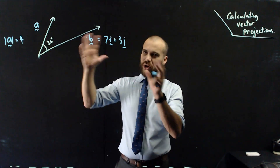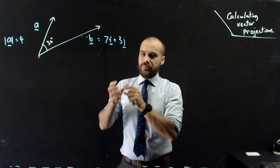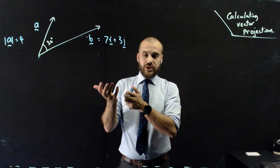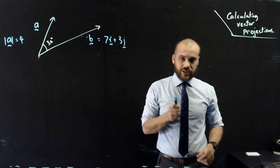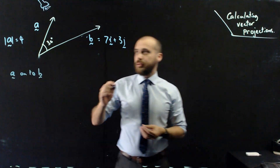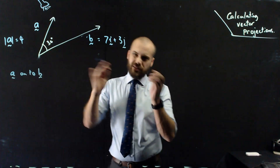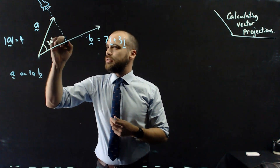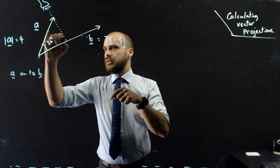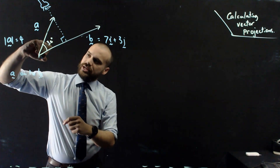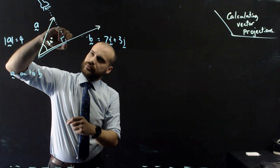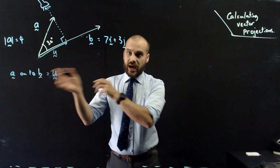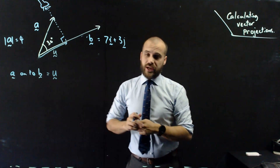This seems like an odd mishmash of information, but it's the easiest assemblage of information to calculate a vector projection. We're going to do A onto B. I'm drawing a perpendicular line to B and projecting A onto B, and that's going to create this new vector, which we'll call U.